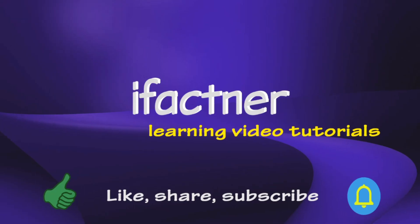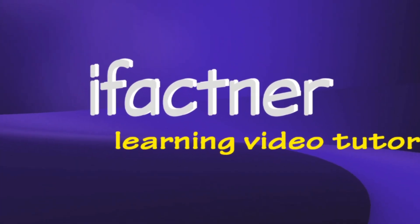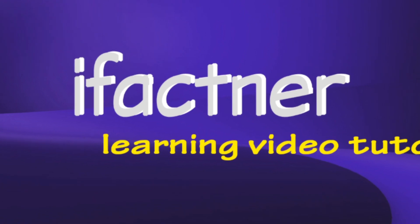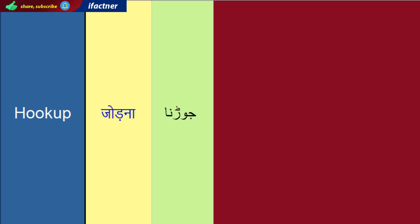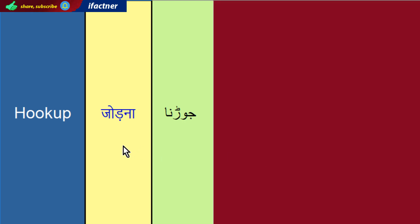Like, Share, Subscribe iFactner. Doosthoon aaj ka word hai hookup. Hookup ka agar haem wiesay meaning deekhyein to is ka matlab hota hai, is ka arth hota hai jhoorna, link up kerna.